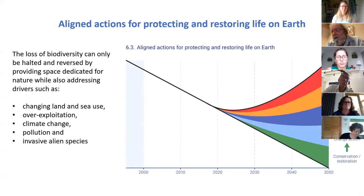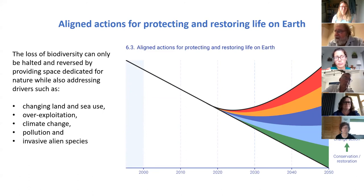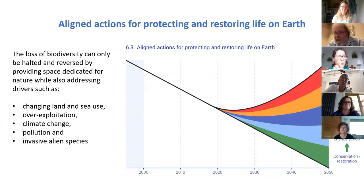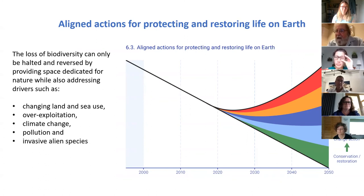To deal with biodiversity, we need simultaneous action: conserve what we have, restore ecosystems, address climate change, address over-exploitation of land and sea, reduce pollution, address invasive species, achieve sustainable production, and reduce consumption. We need all of these things simultaneously — it is not a choice of one or the other, it is all of them.